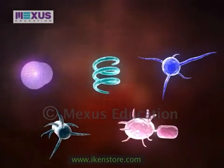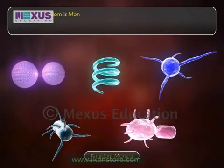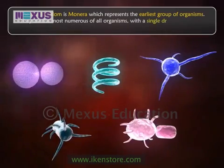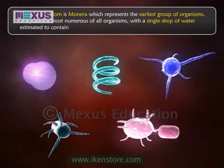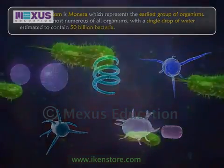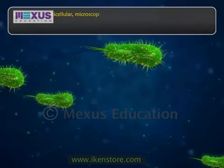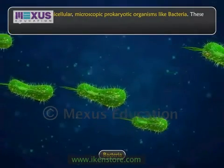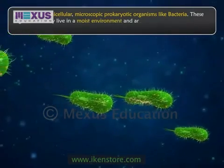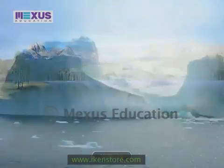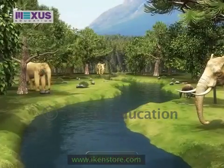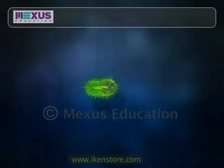The first kingdom is Monera, which represents the earliest group of organisms. They are the most numerous of all organisms, with a single drop of water estimated to contain 50 billion bacteria. Monerans are unicellular, microscopic, prokaryotic organisms such as bacteria. These organisms usually live in a moist environment and are found in hot springs, under ice, in deep ocean floors, deserts, as well as within the bodies of animals and plants.